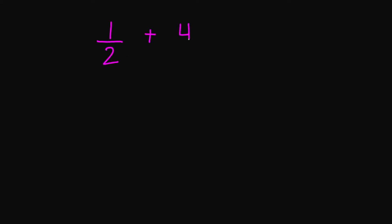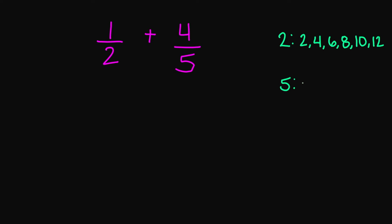Let's try 1 over 2 plus 4 over 5. Notice my denominators are not the same, so I need to find a common denominator. I'm going to write my 2 here to list the multiples of 2, and my 5 here to list the multiples of 5. So for 2: 2, 4, 6, 8, 10, 12. And for 5: 5, 10, 15, 20. Looking at my 2 and my 5, my common denominator is 10.